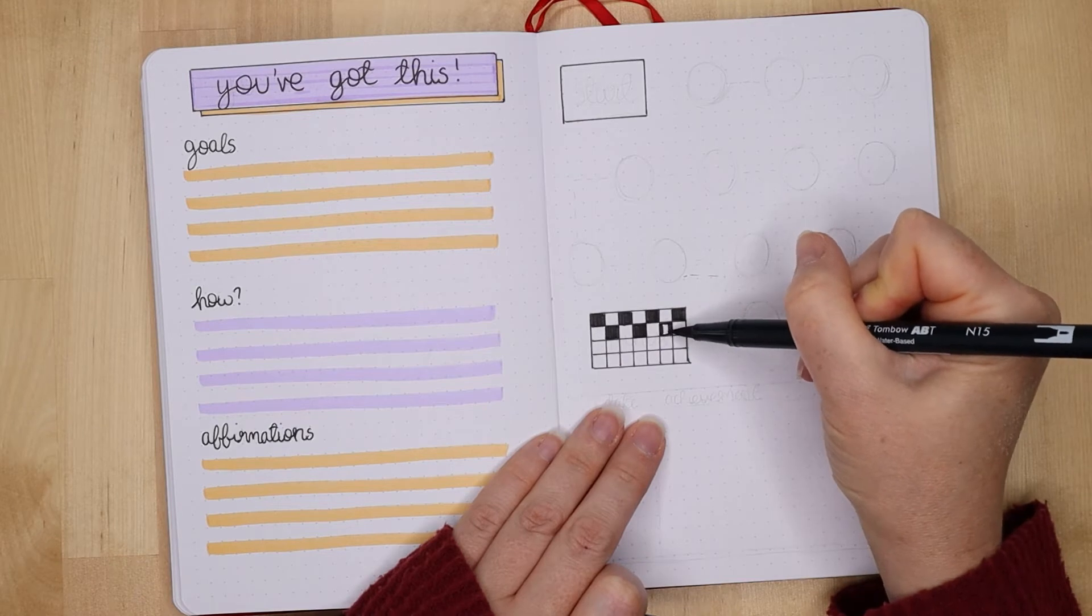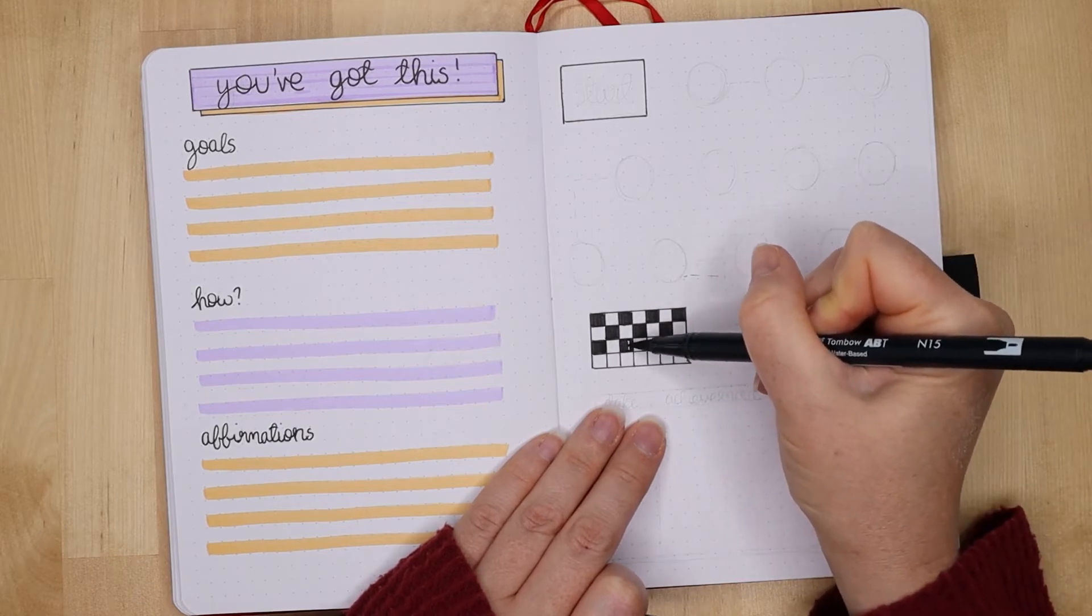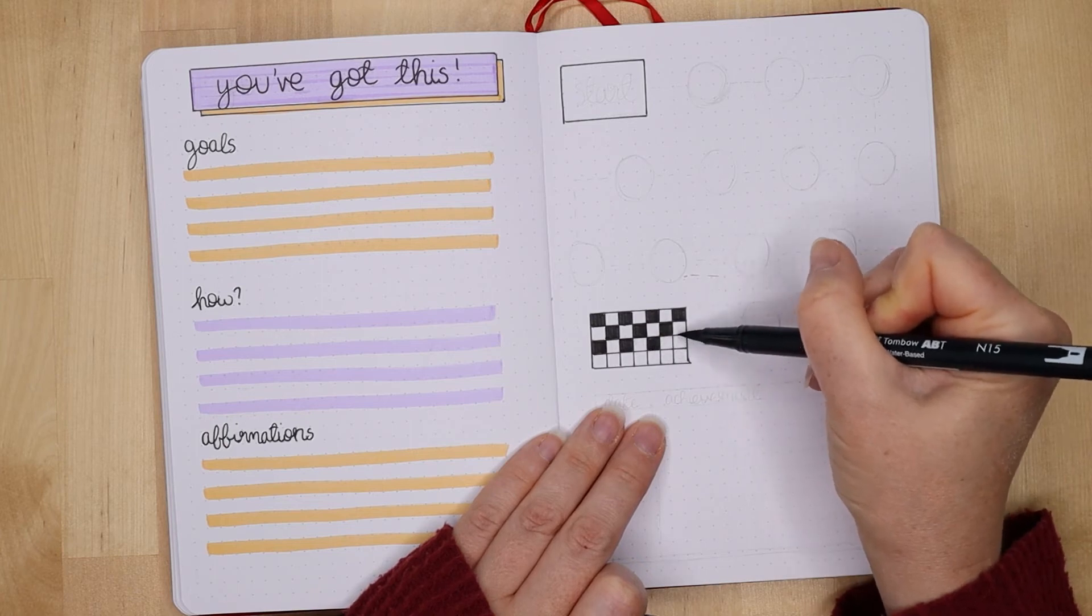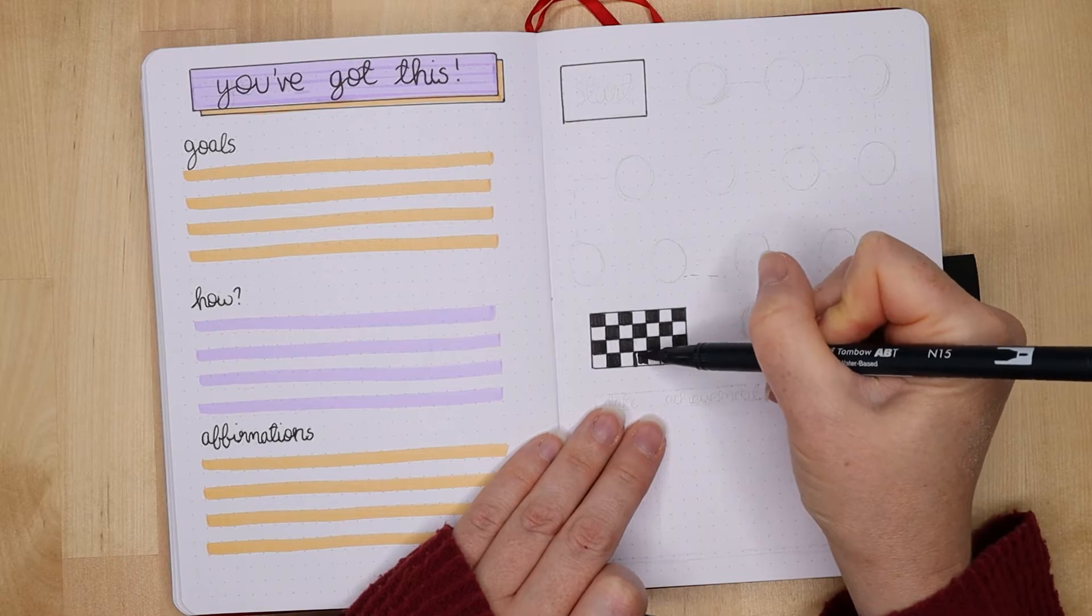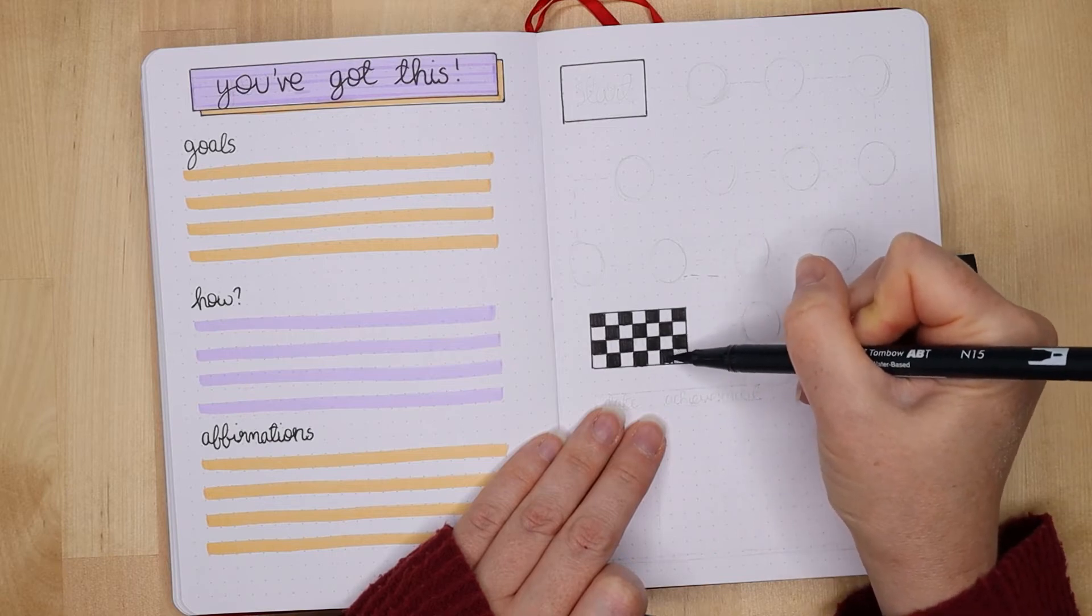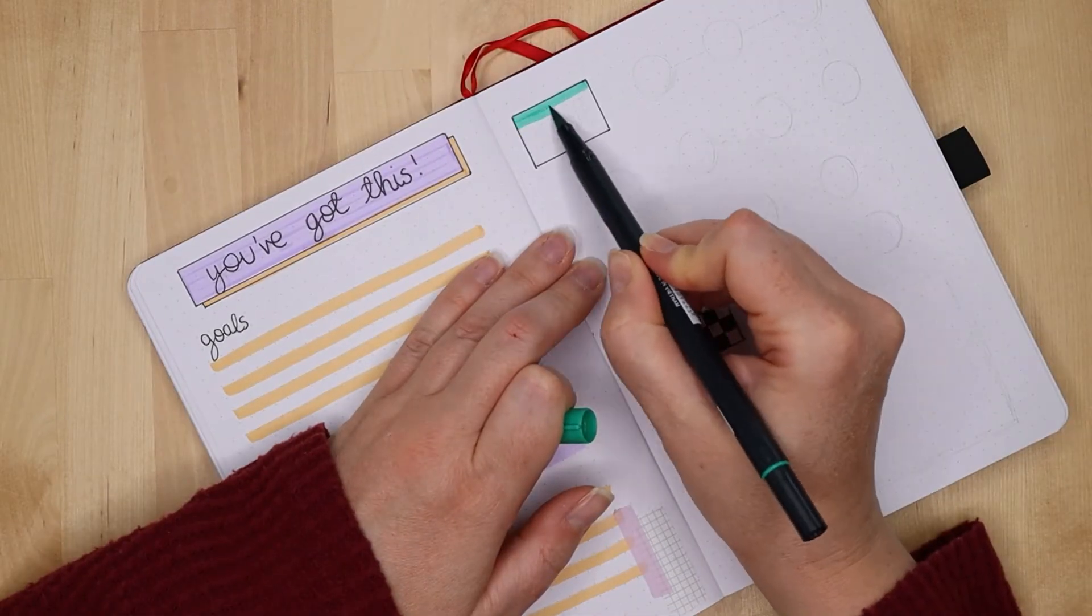On to the second page. This is where I'm going to track my actual weight loss. So I made this like a race track. I have a starting point and then a finish line, which you can see I've just finished coloring in. And then I'm doing some circles all around the page as my little markers of achievements.